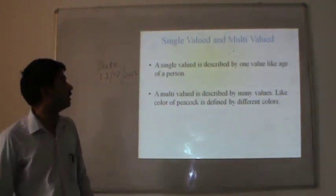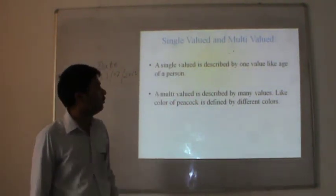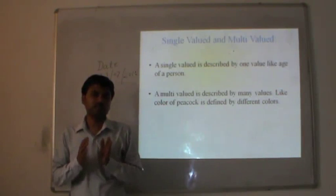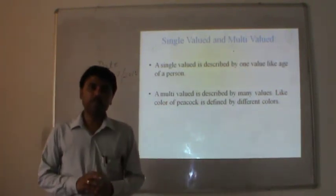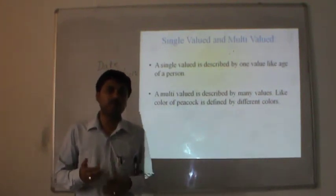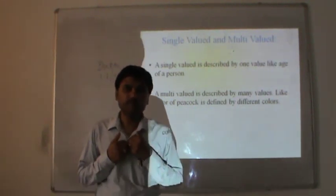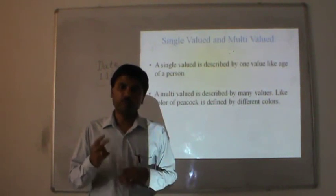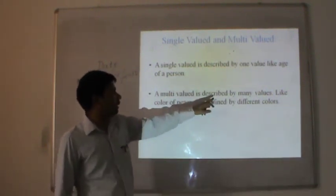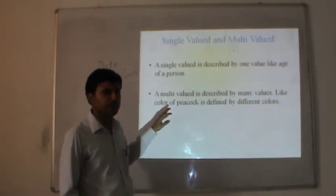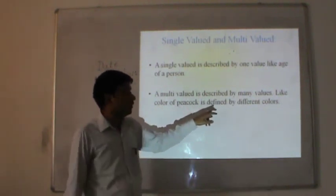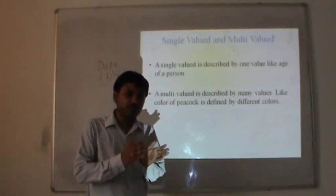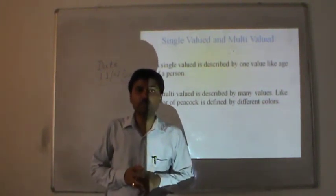Single-value and multi-value attributes: a single-value attribute is described by one value — like age is 30. One person or one student has a single age, it has a single value. Multi-value means, for example, a student or person has more than one mobile — if I have two mobile numbers, then mobile number as an attribute is multi-valued. A multi-value attribute is described by many values — like the color of a car is defined by different colors; at the car you will see different colors. This is defined by multi-value attributes.